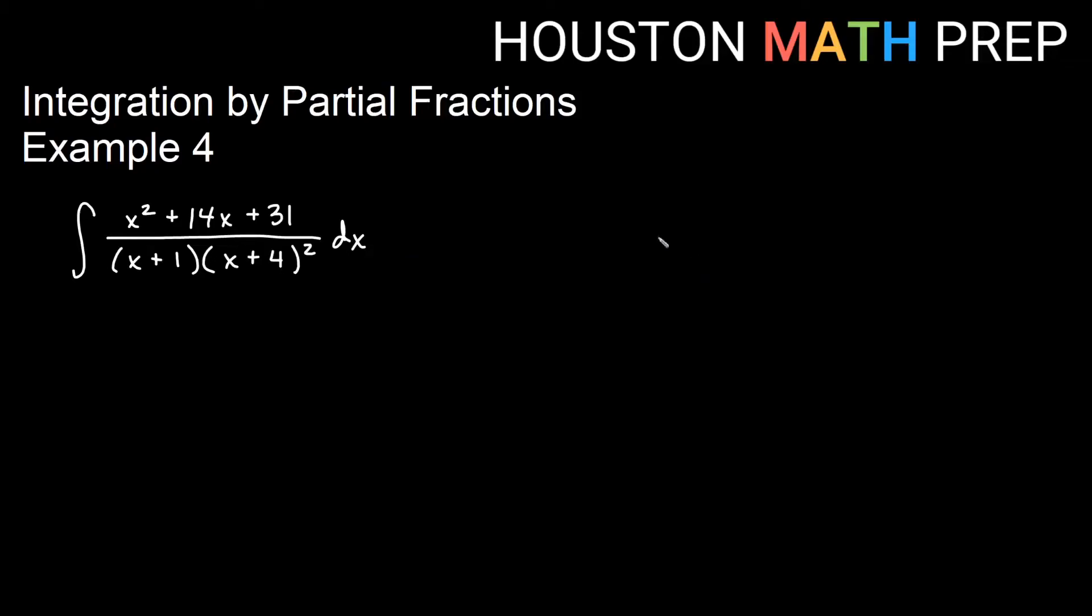Welcome back everyone. Houston Math Prep here for our fourth example, integration by partial fractions. We have this big fraction: we're integrating x squared plus 14x plus 31, all over the factors (x plus 1) and (x plus 4) all squared, that entire quantity.